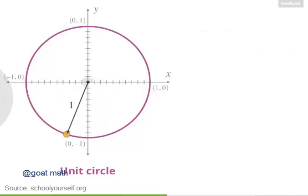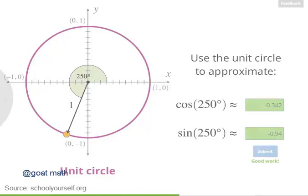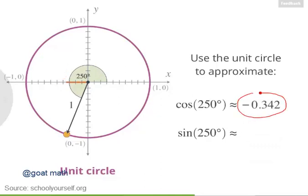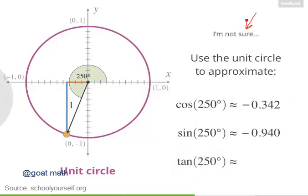Now let's look at an even bigger angle. This angle is 250 degrees from the positive x-axis. Try using this point on the unit circle to approximate both the cosine and sine of 250 degrees. Nicely done. The cosine of 250 degrees is approximately negative 0.342, while the sine of 250 degrees is approximately negative 0.940. Try putting these two facts together to approximate the tangent of 250 degrees. If you're not sure how to do this, click up here.